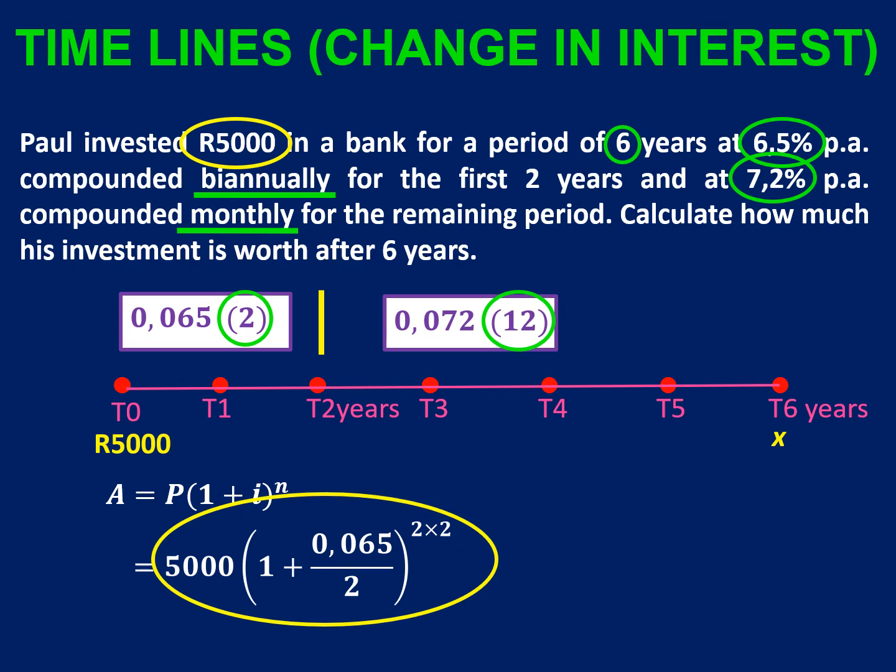Alright so we're going to get an answer and then we're just going to multiply it by the change in interest. So instead of pushing equals on your calculator because we might be tempted to round off too early, rather just understand that that's the P-value. What comes after the P-value in the formula is the next interest bracket.